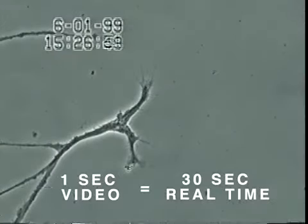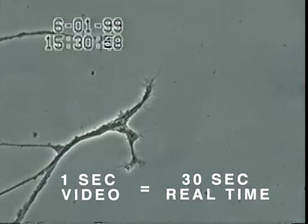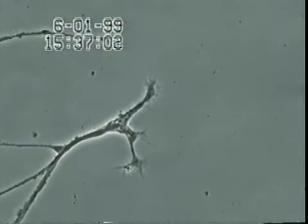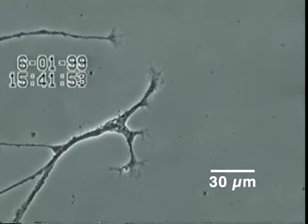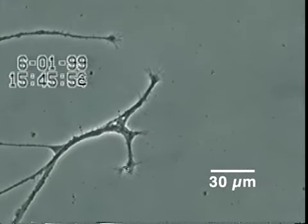In this experiment, neurons also isolated from snail brain tissue were grown in culture for several days, after which very low concentrations of mercury were added to the culture medium for 20 minutes.